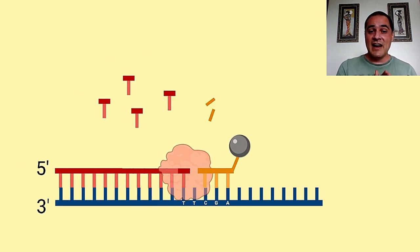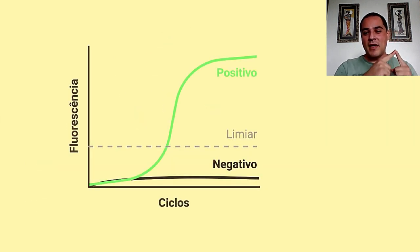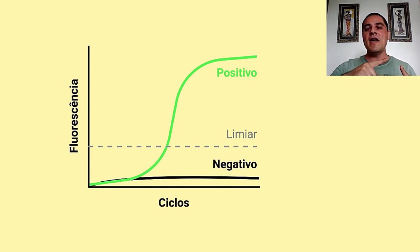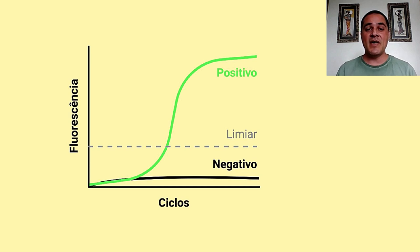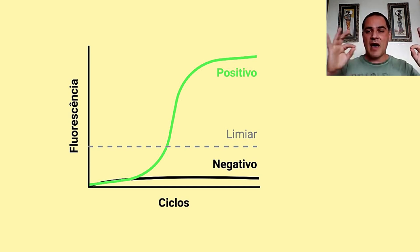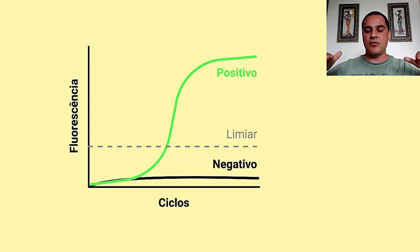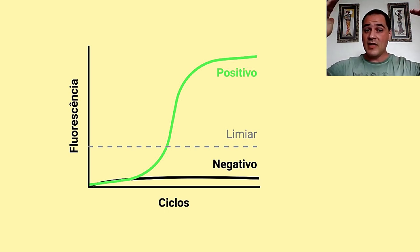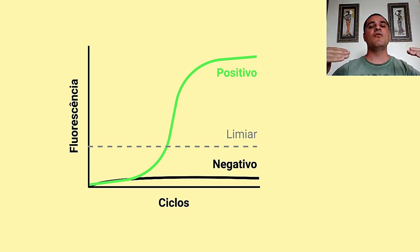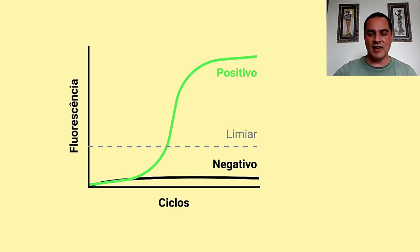Vejam aqui nesse gráfico que, ao momento em que a gente começa a ter um aumento no número de cópias, a gente vai ter um aumento da fluorescência. E a gente vai estabelecer o que a gente chama de limiar, que vai ser uma quantidade mínima de fluorescência para separar aquilo que foi amplificado e que é positivo do que foi negativo, que não foi amplificado.